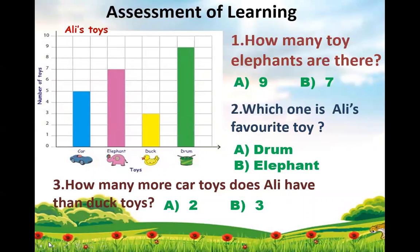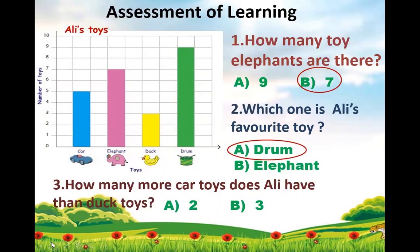Assessment of learning. You can see a block graph with toys on the x-axis and the number of toys on the y-axis. On the x-axis, you can see the car toy, elephant, duck and drum. First question: how many toy elephants are there — is it 9 or 7? It's 7. Second question: which one is Ali's favorite toy — which is more in number, drum or elephant? It's drum. Third question: how many more car toys does Ali have than duck toys? We compare the car toy and the duck toy. The car toy is 5 and the duck toy is 3. When comparing, we do subtraction: 5 minus 3 equals 2.